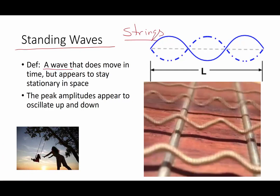Now a standing wave is a wave that does not appear to move in time, but appears to stay stationary in space. This is a wave that appears so that its amplitude oscillates up and down and up and down.